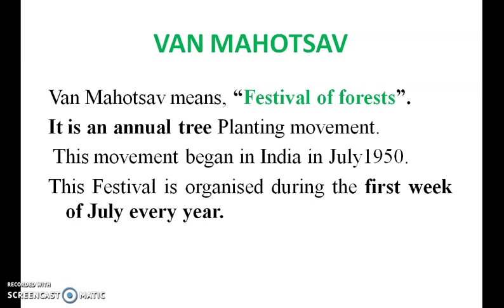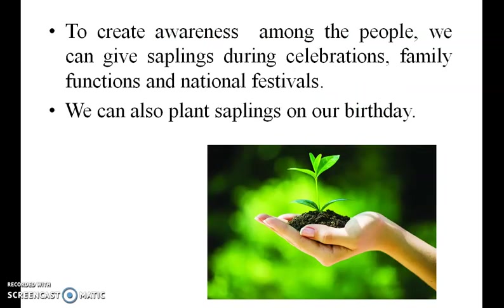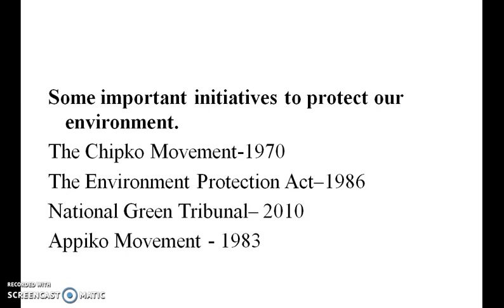Van Mahotsav means festival of forest. It is an annual tree planting movement that began in India in July 1950. This festival is organized during the first week of July every year. To create awareness, we can give saplings during celebrations, family functions and national festivals, and we can plant saplings on our birthday. Some important initiatives to protect our environment are: the Chipko movement in 1970, the Environment Protection Act 1986, the National Green Tribunal in 2010, and the Appiko movement in 1983.